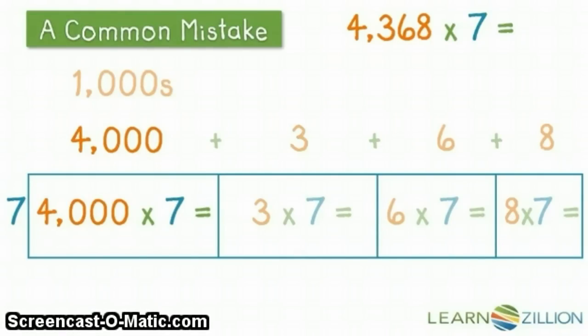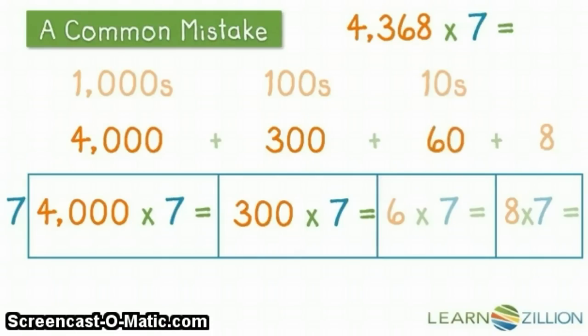The 3 is in the hundreds place, so it's not a 3, it's the number 300, or 300 times 7. The digit 6 is in the tens place, so it's not the number 6, it's the number 60, or 60 times 7.